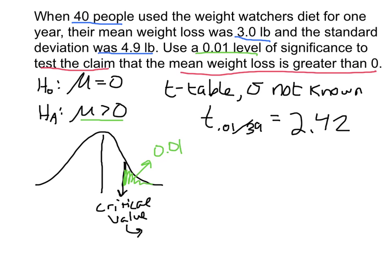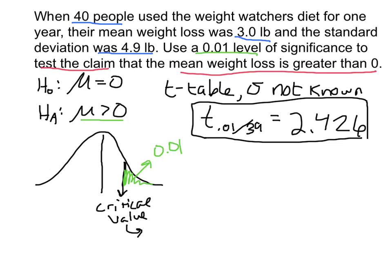Be careful that you're reading the table correctly — the tail for .01 in one tail is the second column in the table. The area in one tail is .01. So 2.426 is our critical value. We want to compare this critical value to our test statistic. Any test statistic that lies outside of 2.426 falls in the rejection region.